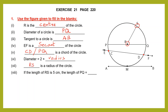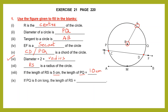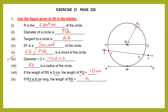If the length of RS is 5 centimeters and RS is the radius, then the length of PQ — the diameter — is 2 into 5, which gives 10 centimeters. Now if PQ, the diameter, is 8 centimeters, then RS, the radius, is half of 8, which is 4 centimeters.